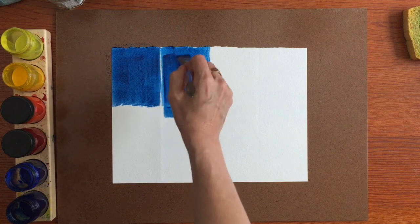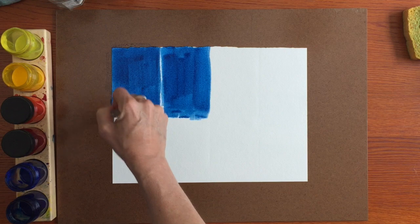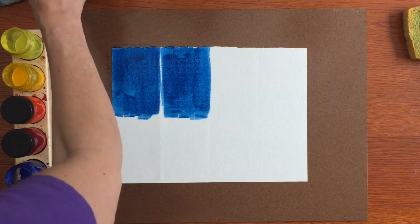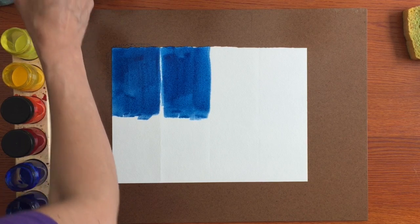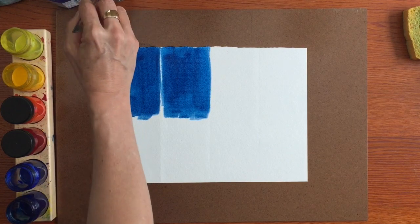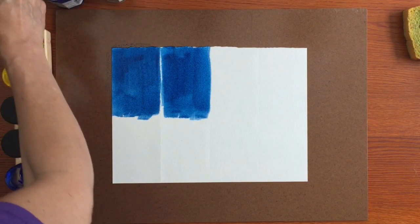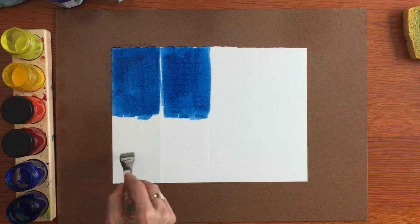Bring the blue halfway down and I'm trying a pretty consistent coat covering of blue, just so that I can get a nice blend with the different yellow. So I'm cleaning my brush really well. First comes the lemon yellow.